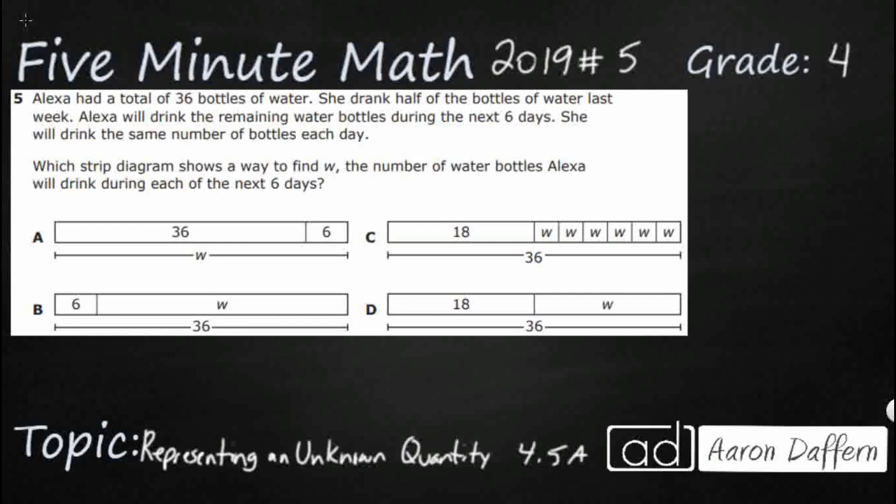So Alexa had a total, that's going to be important, of 36 bottles of water. She drank half of the bottles of water last week and she'll drink the remaining bottles during the next six days, the same number of bottles each day. So that is kind of confusing. We need to find W, the number of water bottles that she's going to drink during each of the next six days.